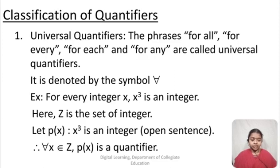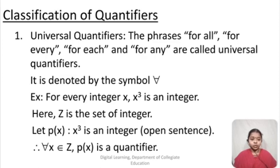Let us see an example of a universal quantifier. The example says: for every integer x, x cubed is an integer. We write this as a quantified statement. Since z is the set of integers, and since x is a variable, this is an open statement. So p(x) is 'x cubed is an integer'. In symbolic form: for all x belongs to Z, x cubed is an integer — that is, ∀x ∈ Z, p(x).